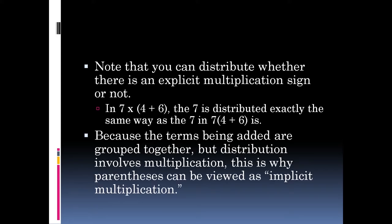Because the terms being added are grouped together, but distribution involves multiplication, this is why parentheses can be viewed as implicit multiplication. Implicit multiplication comes because of the law of distribution. It's not a magic thing that just appeared out of nowhere. There is a reason that we use parentheses as multiplication — it's because of distribution.